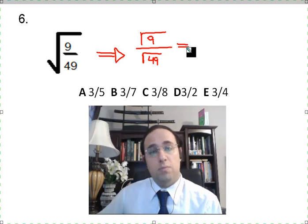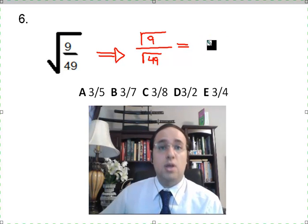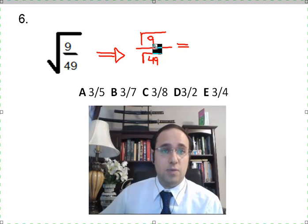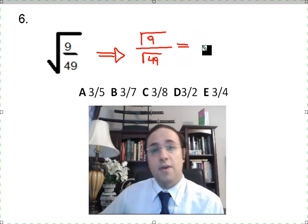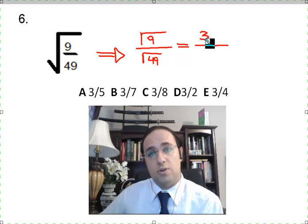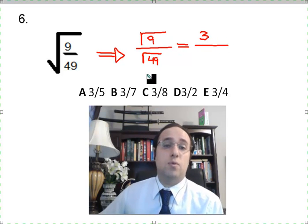Now, we know that the square root means that the answer, the number that is going to be outside the square root, times itself twice gives me the number inside the square root. So the square root of 9 means what times itself gives me 9. So 3 would be the answer because 3 times 3 equals 9.